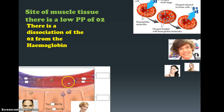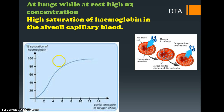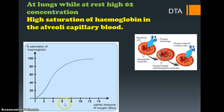If we were doing exercise, we could presume that more O2 molecules would be dropped off within the working muscles because more would be needed. We're going to investigate some other factors that affect dissociation. At the lungs while at rest there is a high concentration of O2, giving a high saturation of hemoglobin in the alveoli capillaries. Let's have a look at that on this chart — the dissociation curve.